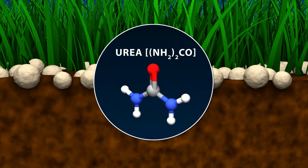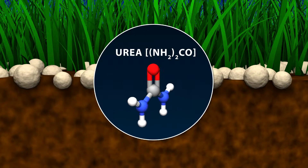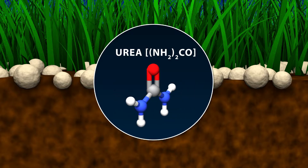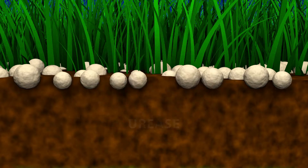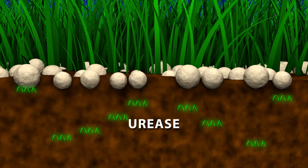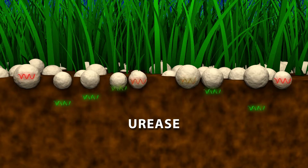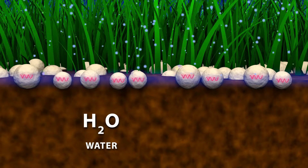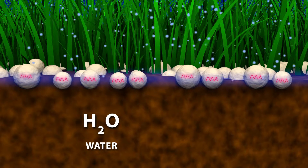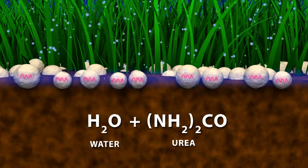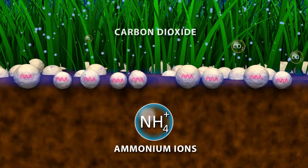Urea is one of the three most important constituents of granular fertilizers. Urease, an exo-enzyme, is naturally exuded by a number of soil organisms. In the presence of water, urease hydrolyzes urea to form dissolved ammonium ions and carbon dioxide.